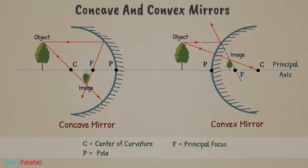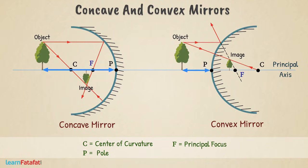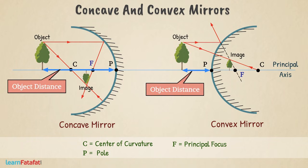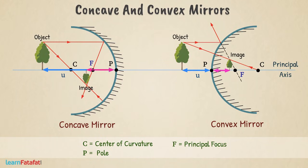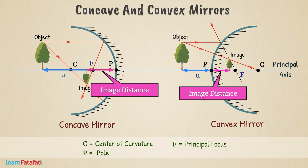The distance from the pole at which the object is placed is called the object distance, denoted by small u. And the distance from the pole at which image is formed is called the image distance, denoted by small v.